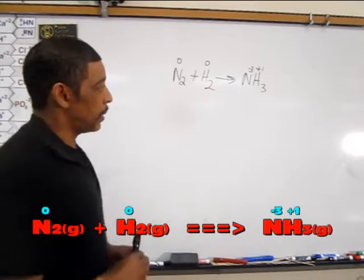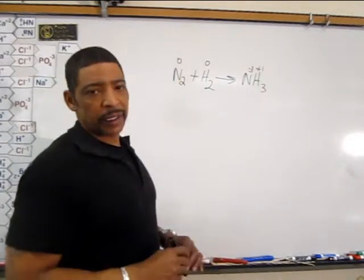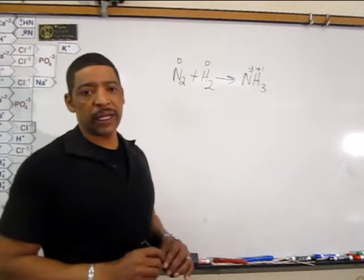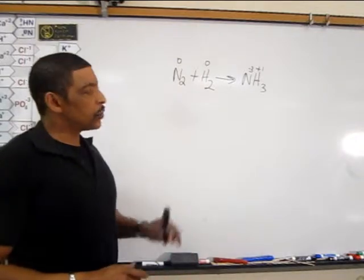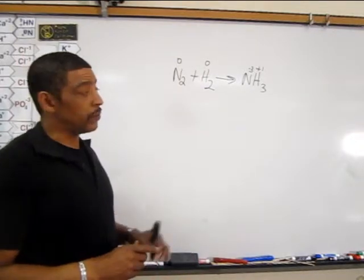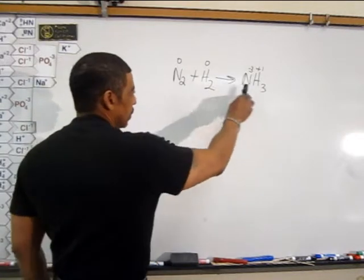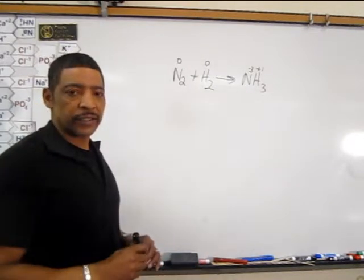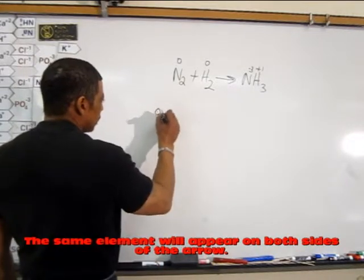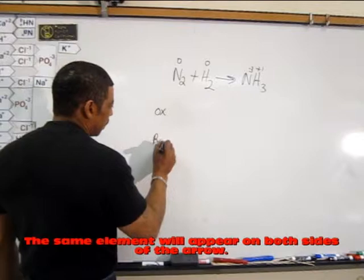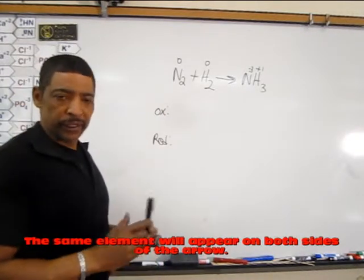In a compound, the oxidation number of hydrogen will always be plus one, except in a compound known as a hydride, in which case the oxidation number of hydrogen will be minus one. To determine the half reactions involved in this process, simply separate the elements into two reactions — there is an oxidation half reaction, and there is a reduction half reaction. Oxidation and reduction both occur simultaneously during the reaction.